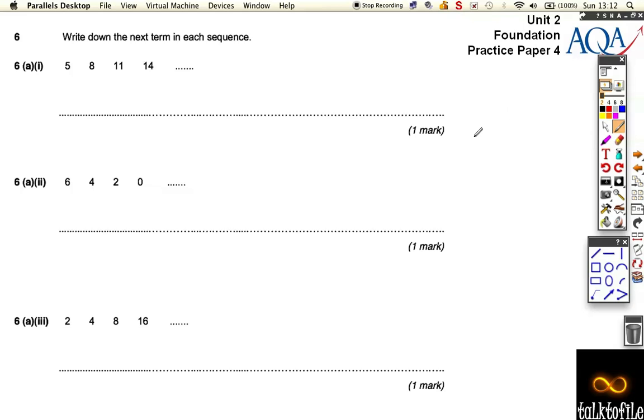Right, question number six. We've got some sequences questions. There's a part B over the page as well. We're going to find out the next term in all of these. Well, what's happening here is it's going up by three, up by three, and it's going up by three every time. So the next number is obviously going to be 17. Nice easy mark.